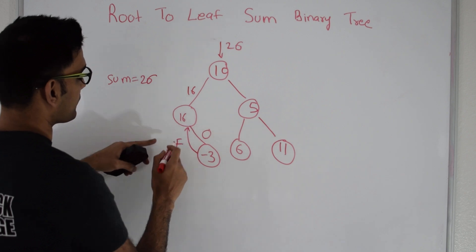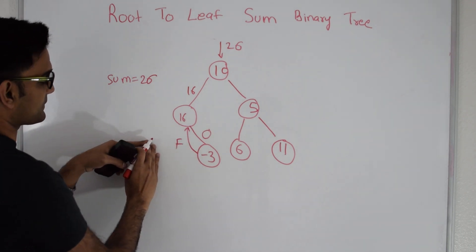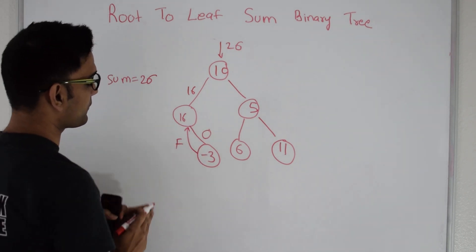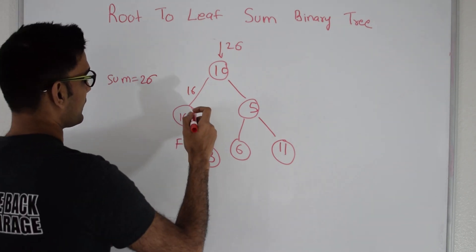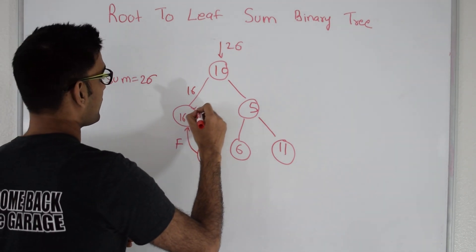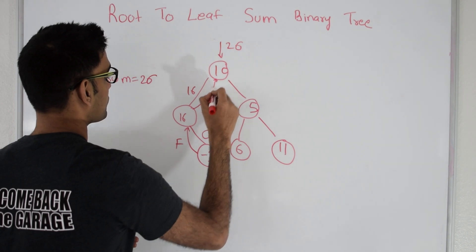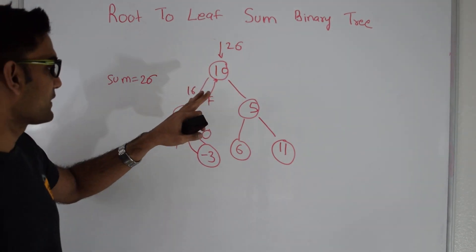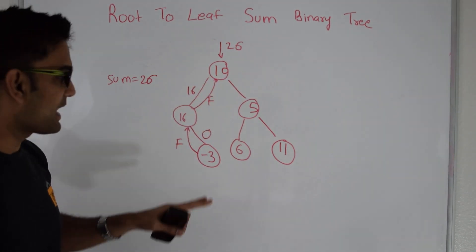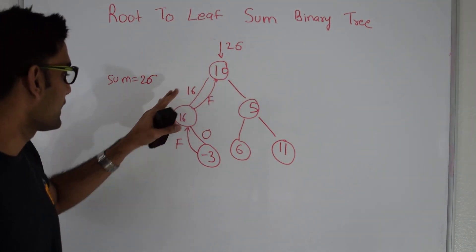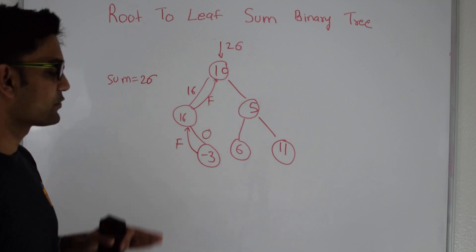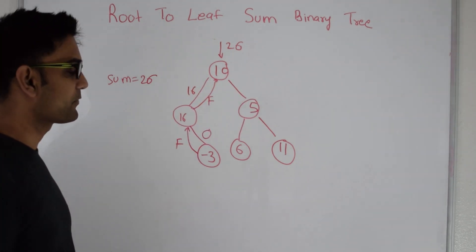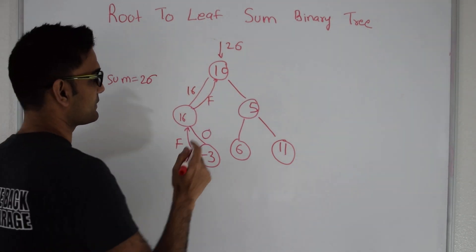So the right child returns false to the calling function. Node 16 got false from its left side because left did not exist, and it also got false from the right side. So it returns false to node 10. Node 10 now knows there is no path on the left side which sums to 26.